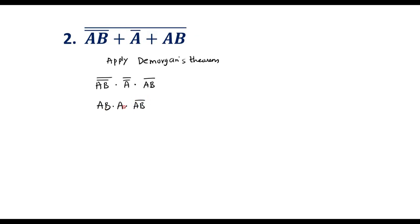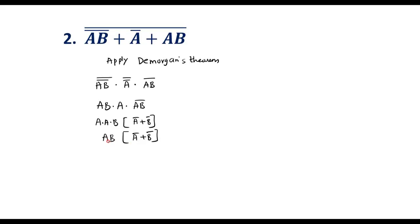So the complement of complement of ab̄ is ab, complement of complement of ā is a, and we have (ab)̄. Further: a·b·a = a·b, and applying De Morgan's to (ab)̄ gives ā + b̄. So a·b·(ā + b̄) = ab·ā + ab·b̄ = 0 + 0 = 0. Therefore the simplified expression is 0.